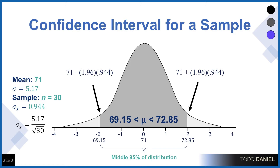It will look like this: here is our normal curve. The upper limit is the point estimate plus 1.96 times the standard error of the mean, and the lower limit is the point estimate minus 1.96 times the standard error.